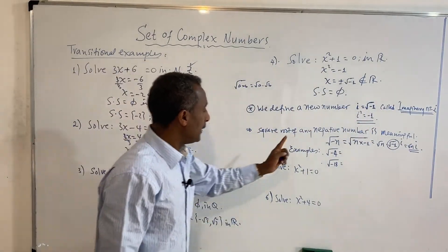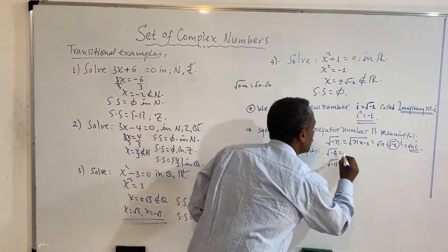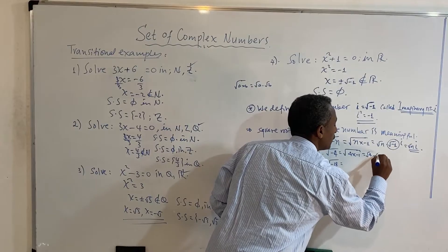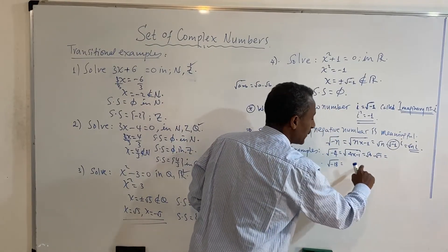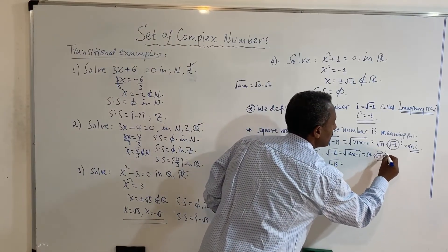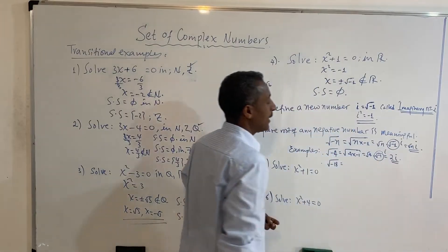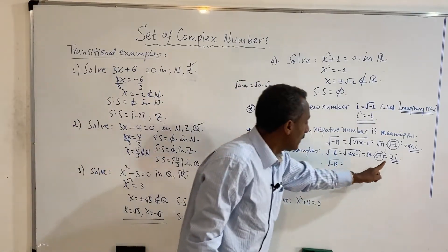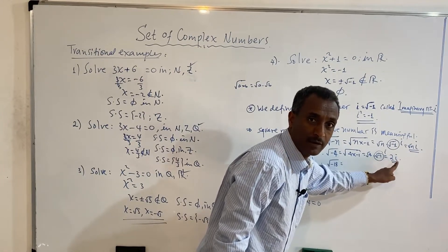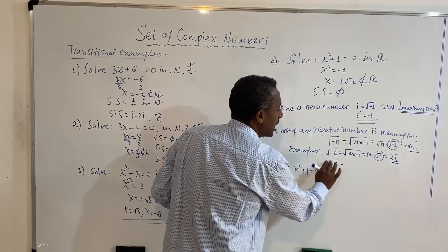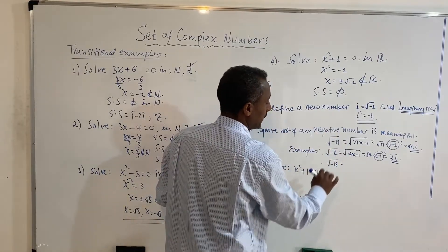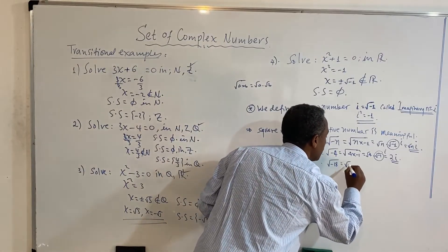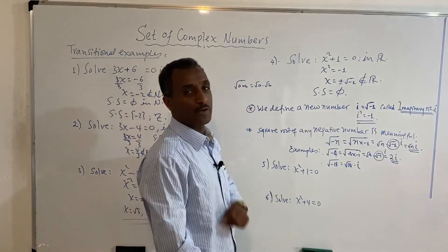The square root of negative 4 equals the square root of 4 times negative 1, which equals the square root of 4 times i, which equals 2i. So 2i is an imaginary number — it is a multiple of i. If you have the square root of a negative number, the result is an imaginary number expressed as a multiple of i.